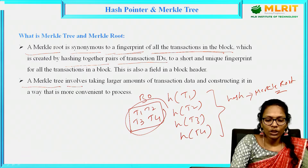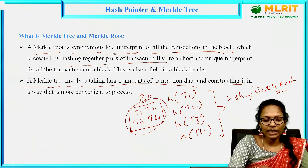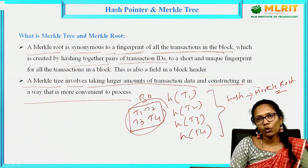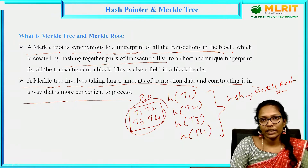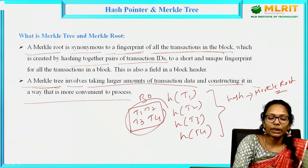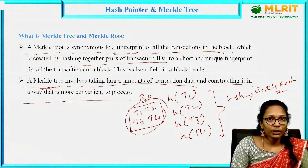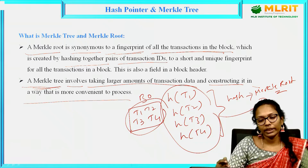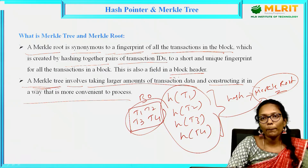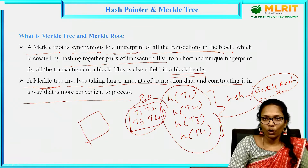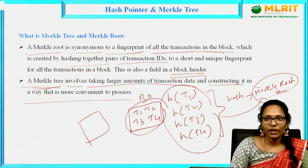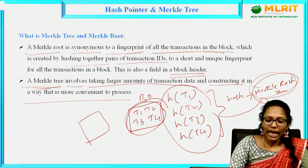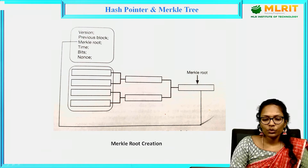A Merkle tree involves taking larger amounts of transaction data and constructing it in a tree representation. How the Merkle root is created and generated is indicated in the Merkle tree representation. You generate the Merkle root by combining all the hashes of the individual transactions. This Merkle root will also be mentioned in the block header. Each block contains one block header which contains transaction data, timestamp, hash value, and also the Merkle root — which is the hash of all the transactions in that block.